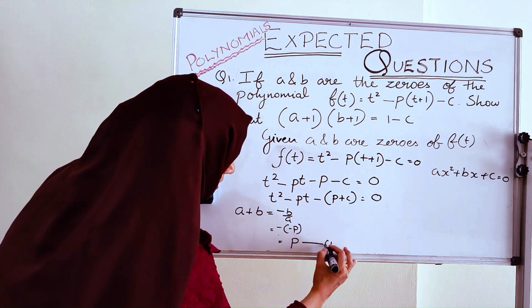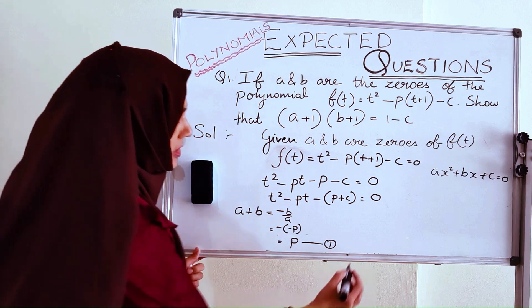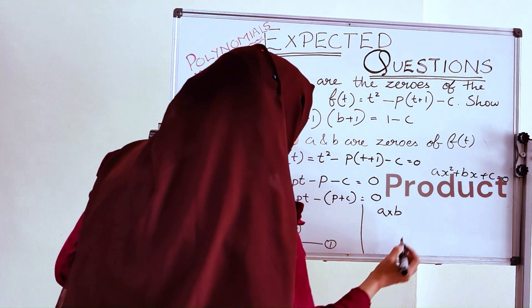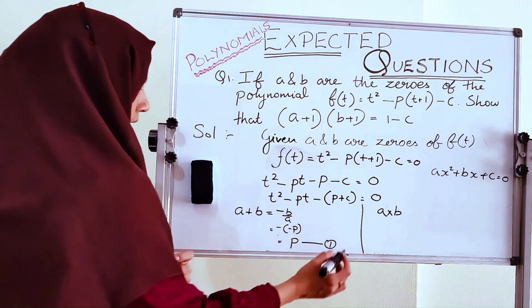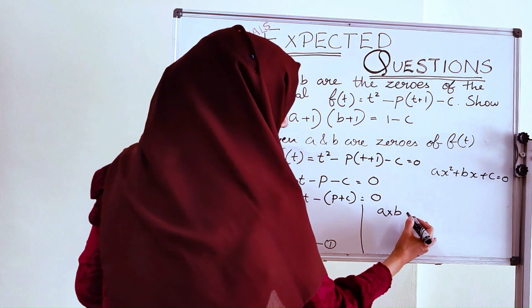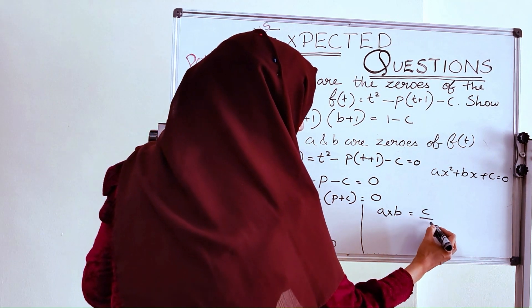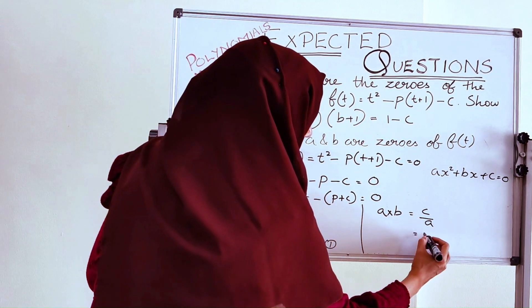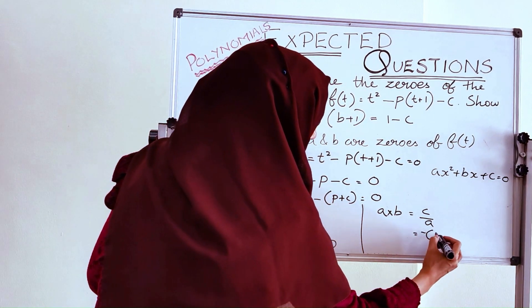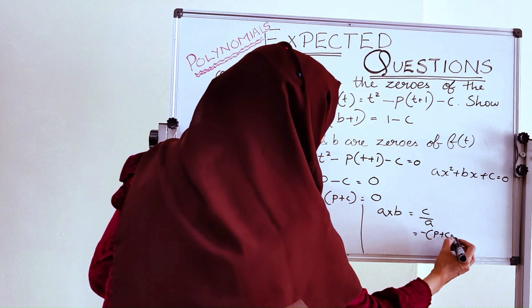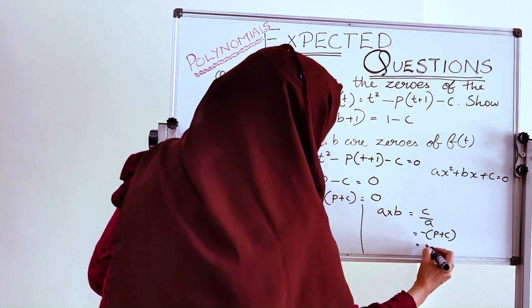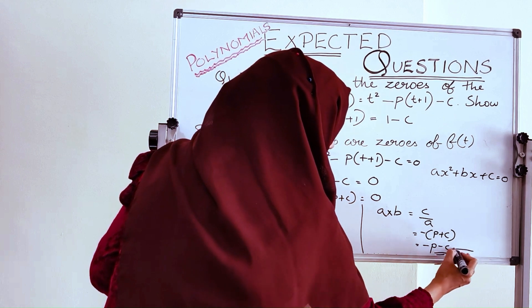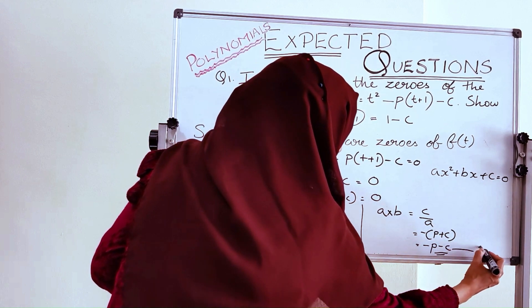Then, what is the product of the zeros of the polynomial? a × b is equal to c/a. What is our c here? It is minus p plus c, which gives us minus p minus c. So a × b = −p − c. This is our equation number 2.